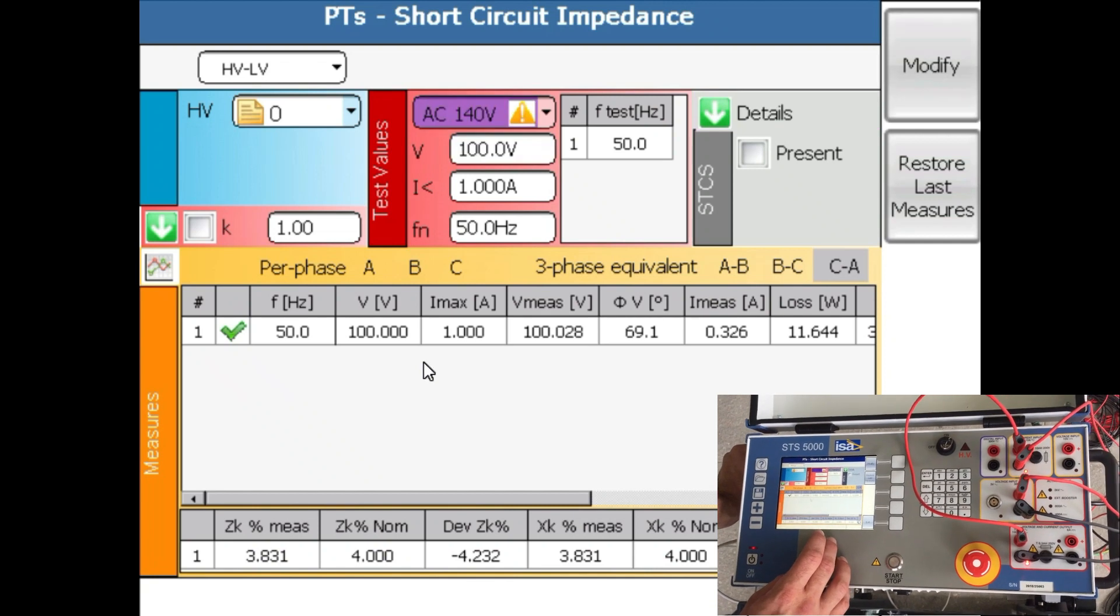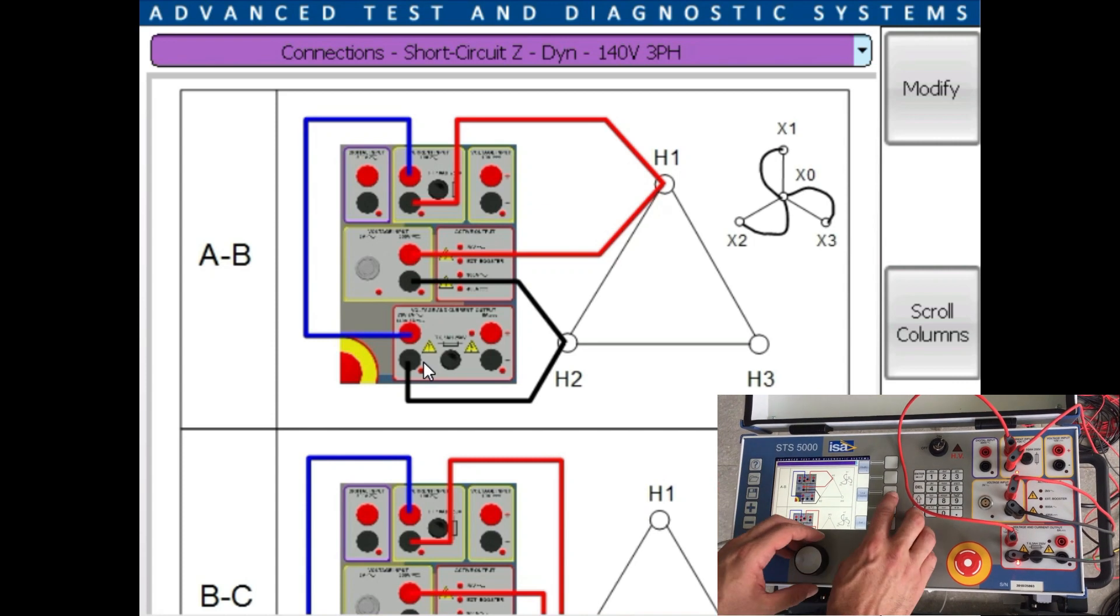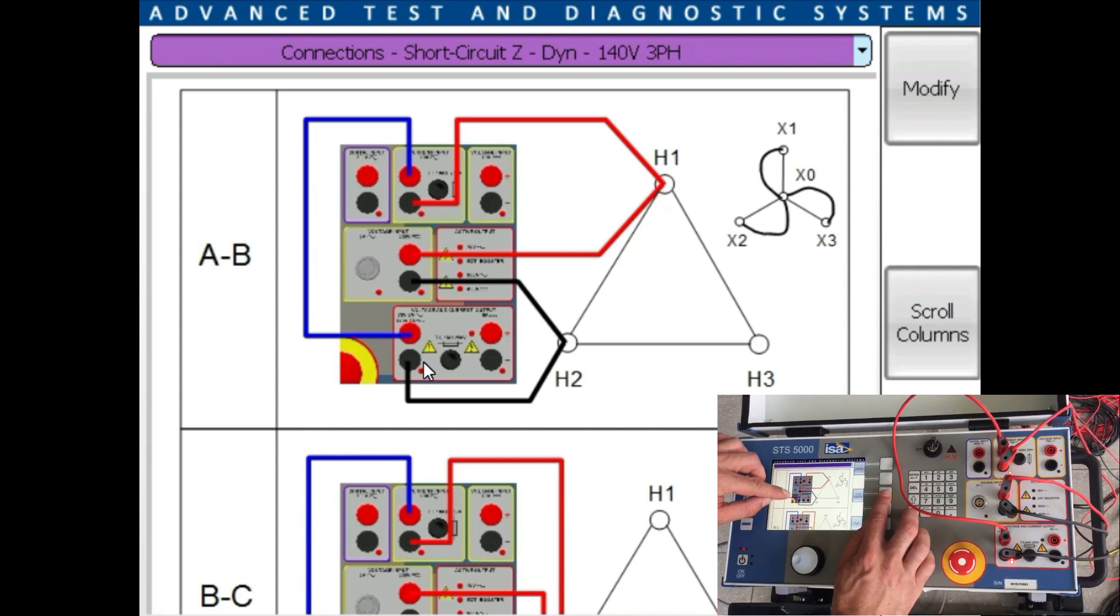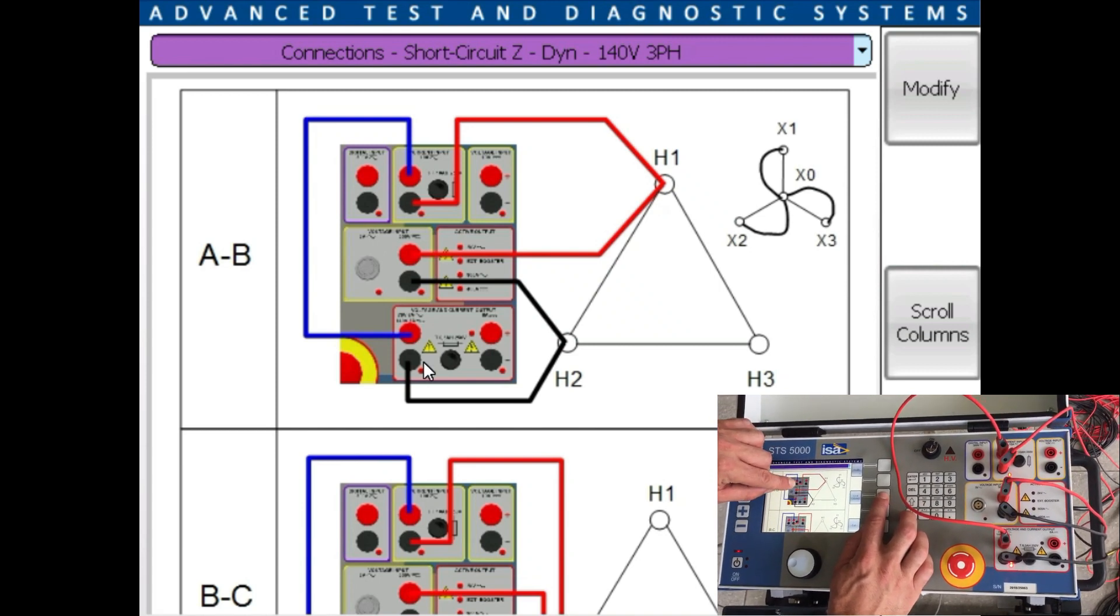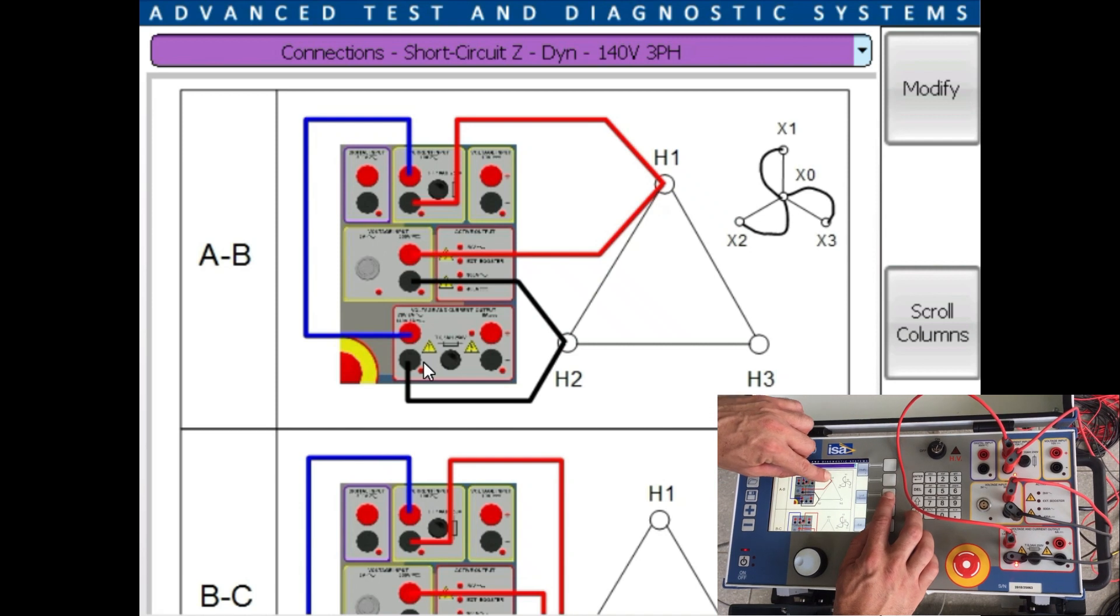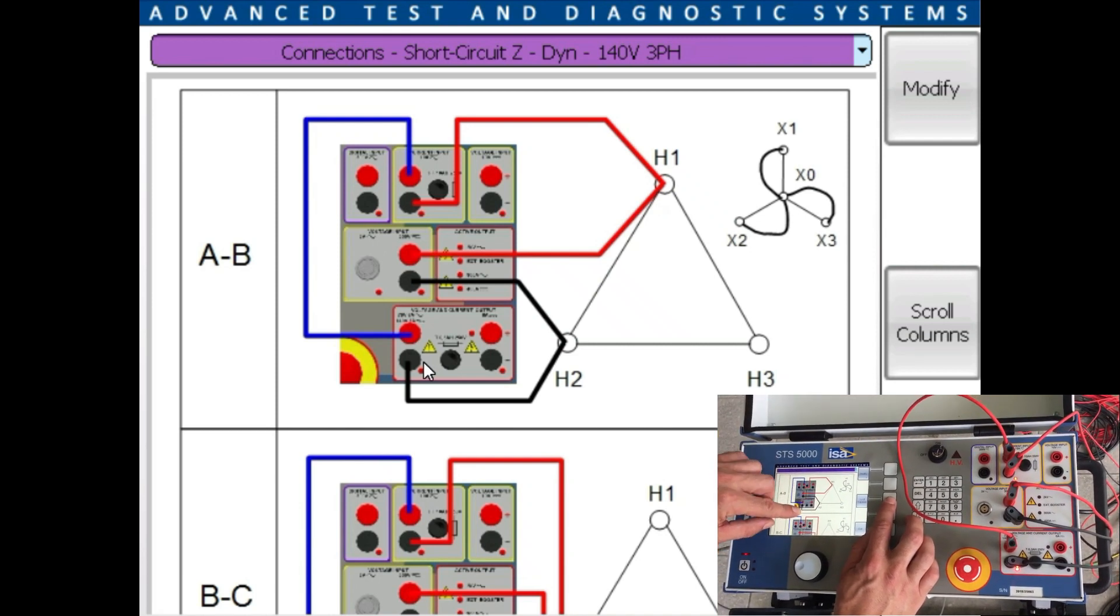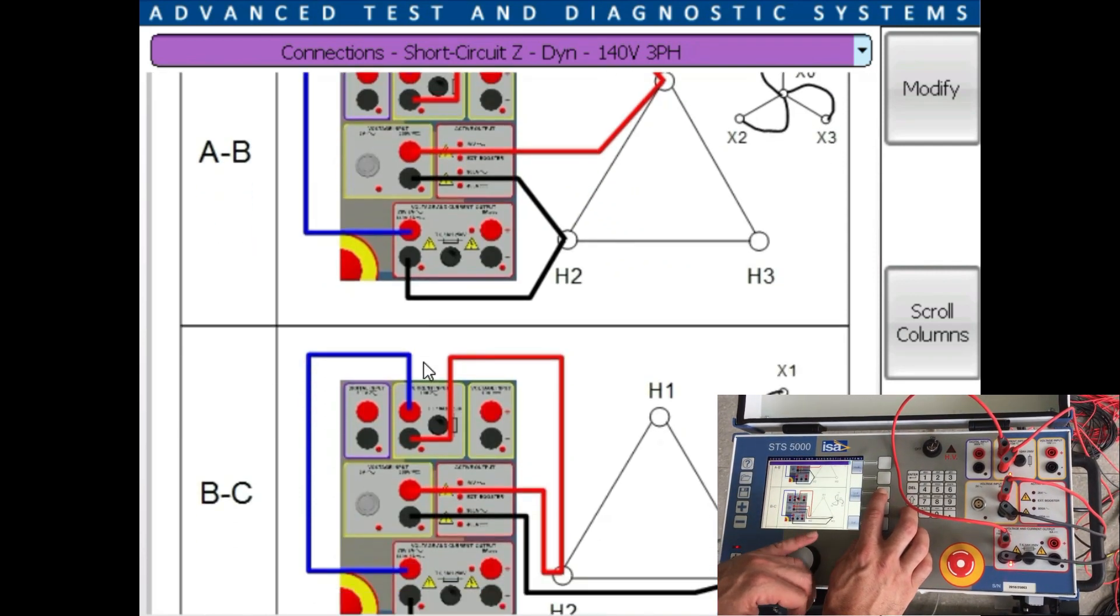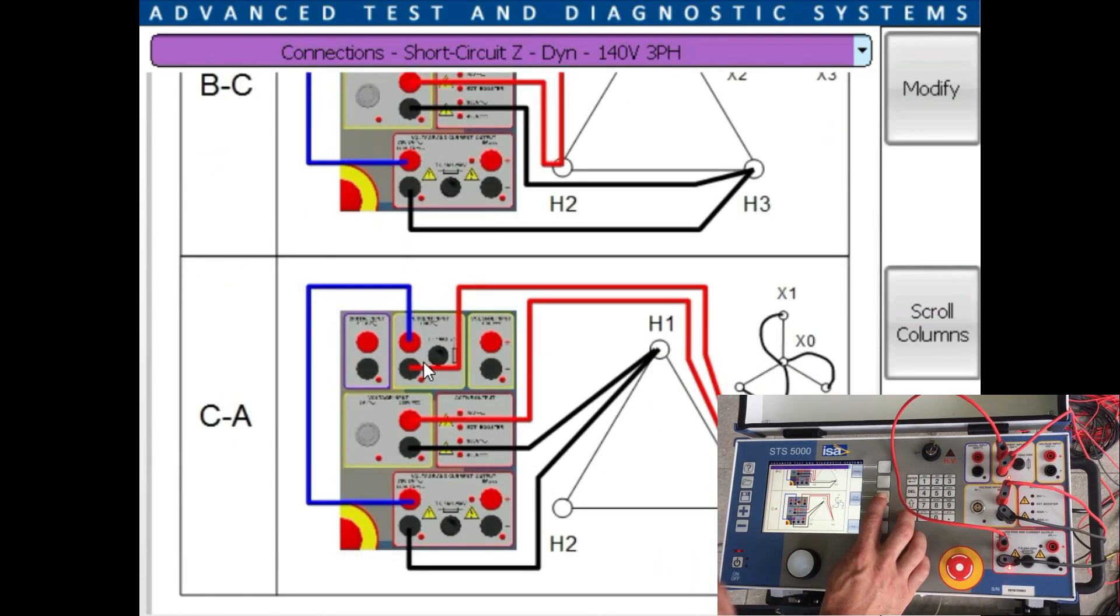Also keep in mind that whenever you press a question mark button you see how the connections need to be done. From voltage AC output to the current measurement input to measure the current onto the high voltage side and closing with this. Then measuring also the voltage drop on the high voltage side for phases AB, BC and CA.